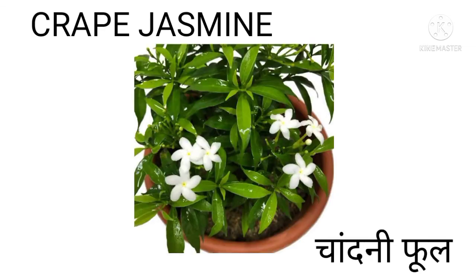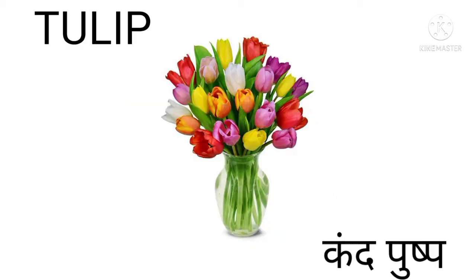Crab Jasmine — Crab Jasmine means Jui Chandni. Tulip — Tulip means Kanakambaram de Pushpa.